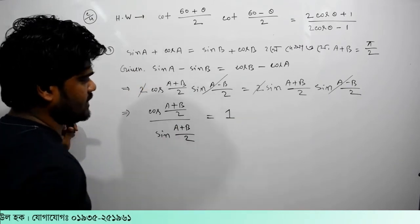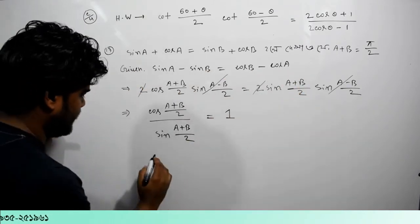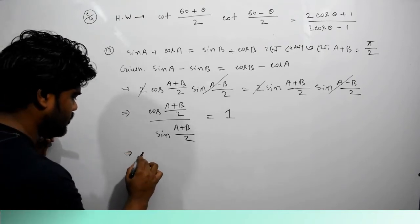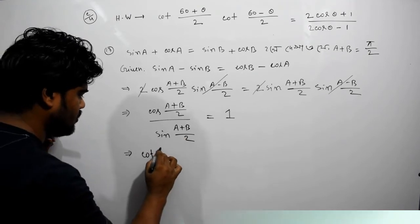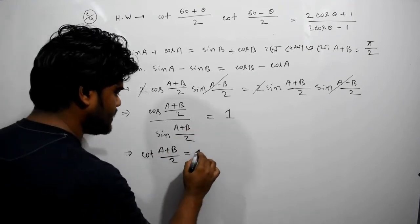We have to write: sin A minus B by 2 is equal to sin(A minus B) by 2.